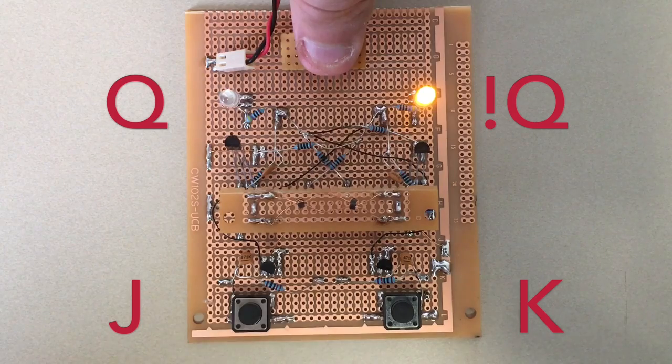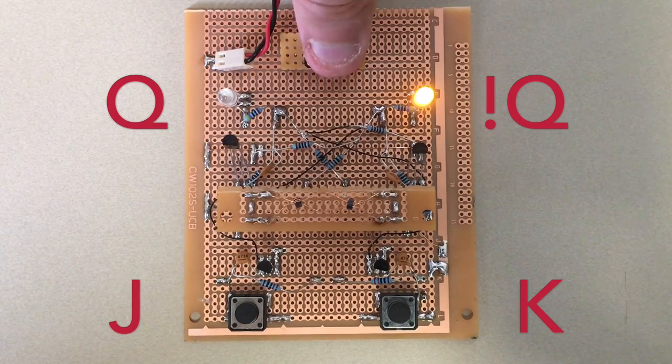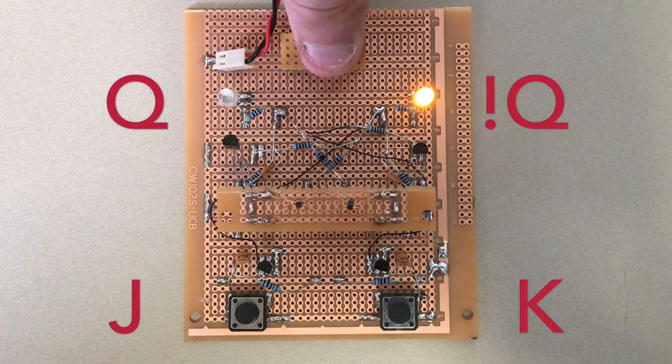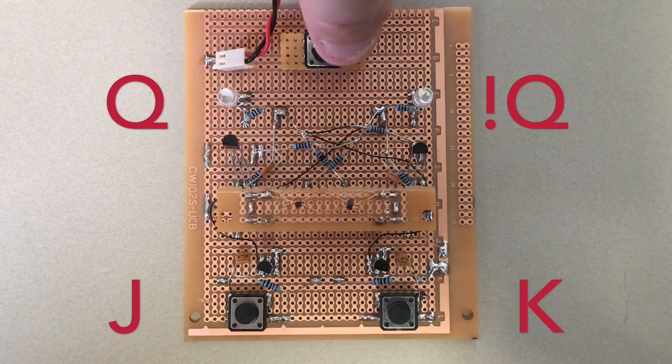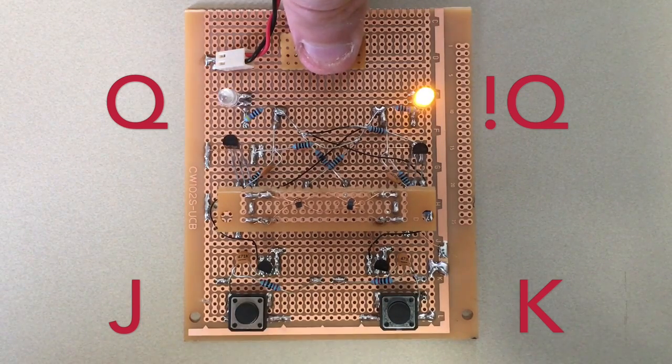The output NOT Q to the right there is always the inverted state of Q, so we could really just pay attention to Q and call that the one bit of memory that is either set or clear.